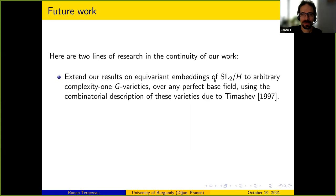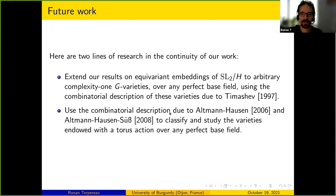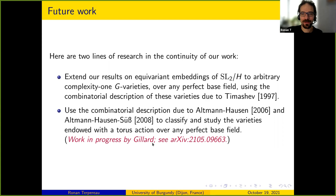In another direction, one can apply the combinatorial description due to Altmann–Hausen (and Altmann–Hausen–Süss in the non-affine case) to classify varieties with a torus action over any perfect base field — including toric varieties as a special case, but also tori that do not act with an open orbit. Pierre-Alexandre Gillard, a PhD student jointly supervised by me and Adrien Dubouloz, is working in this direction.